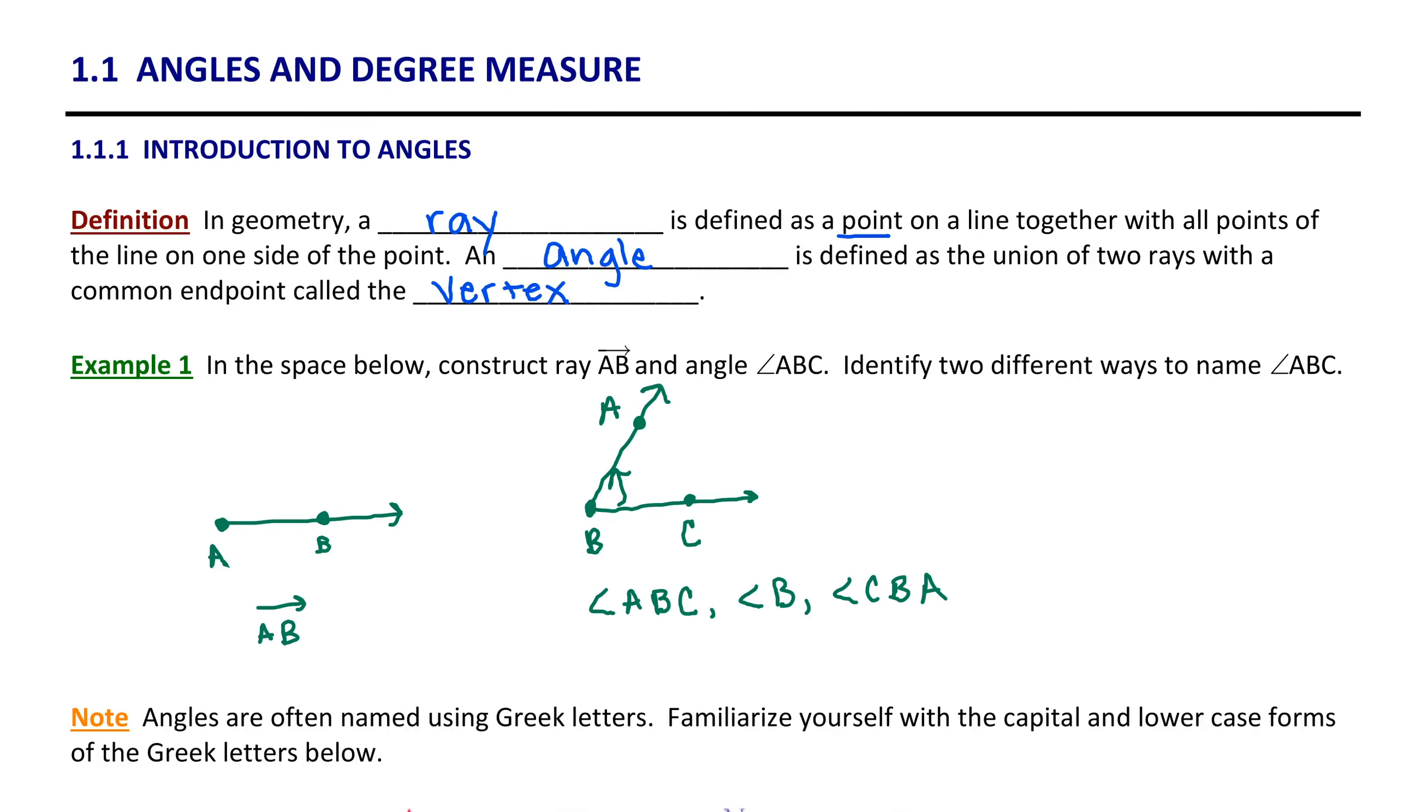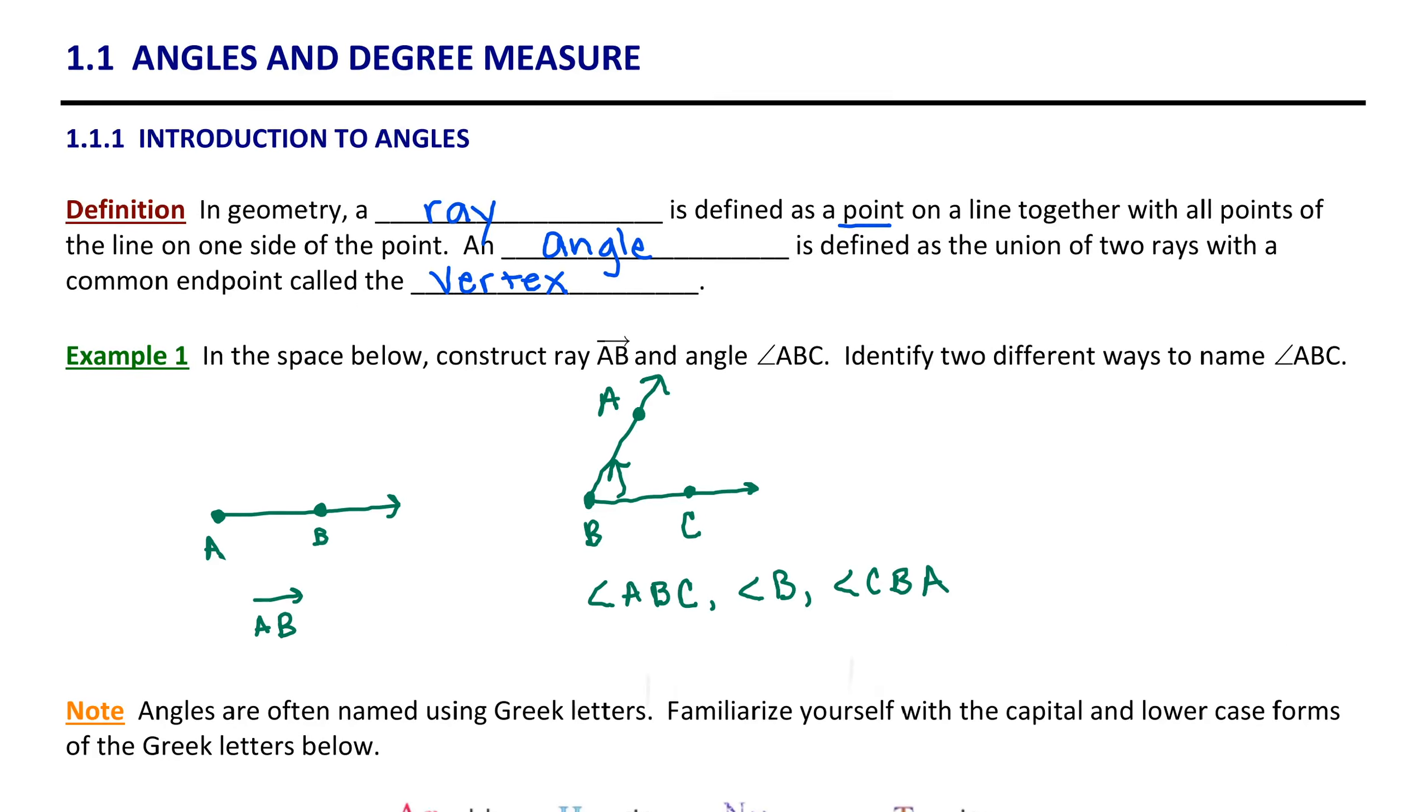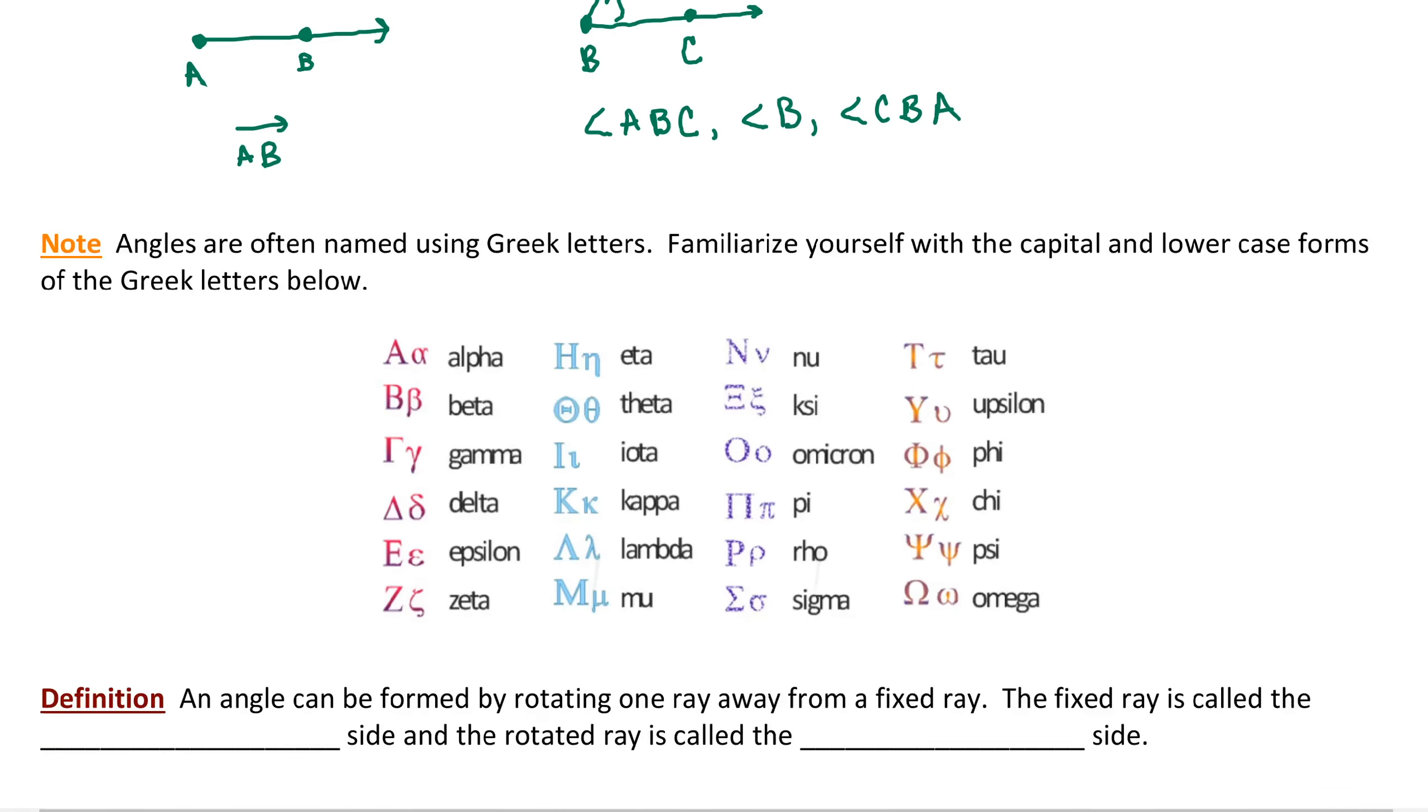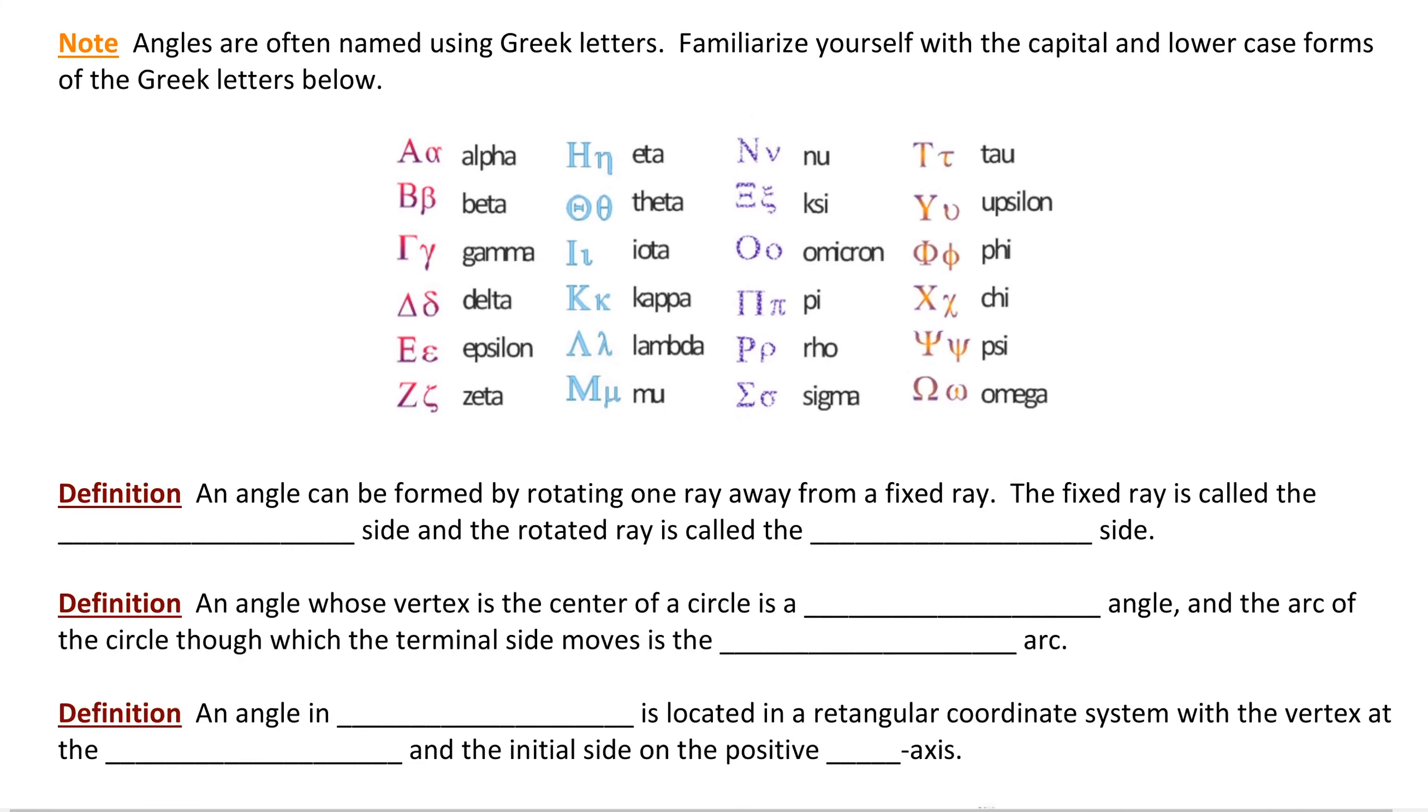Note that angles are often named using Greek letters. You'll definitely want to familiarize yourself with the capital and lowercase forms of the Greek letters below. We will use many of these Greek letters to name angles in trigonometry. Some common ones will be alpha, specifically the lowercase alpha, lowercase beta, and lowercase gamma. Those are often used for naming angles.